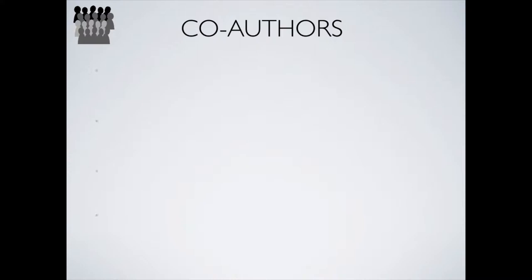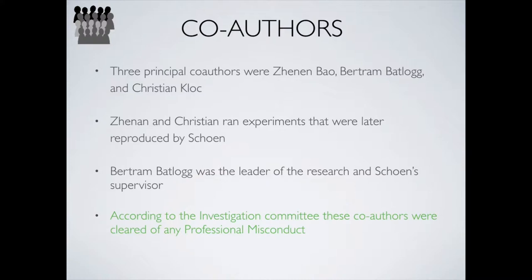Jean needed some help to conduct these experiments, and he had three principal co-authors: Jeannin Bao, Bertram Batlog, and Christian Klock. Jeannin and Christian ran experiments that were later reproduced by Schoen. Bertram Batlog was the leader of the research and actually Schoen's supervisor. According to the investigation committee, these co-authors were cleared of any professional misconduct.